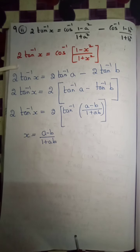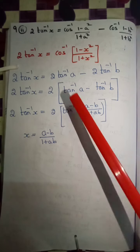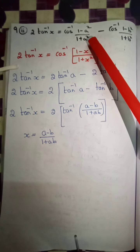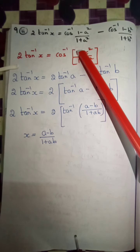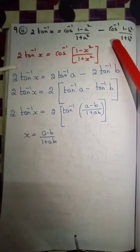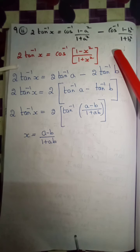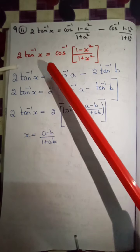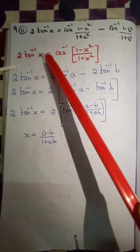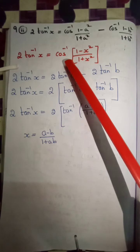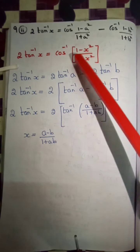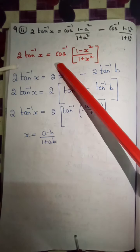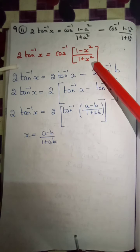Exercise 4.5, ninth question, second subdivision. We need to prove that 2 tan inverse of x is equal to cos inverse of (1 minus a square by 1 plus a square) minus cos inverse of (1 minus b square by 1 plus b square). We have to use the property: 2 tan inverse of x is equal to cos inverse of (1 minus x square by 1 plus x square).